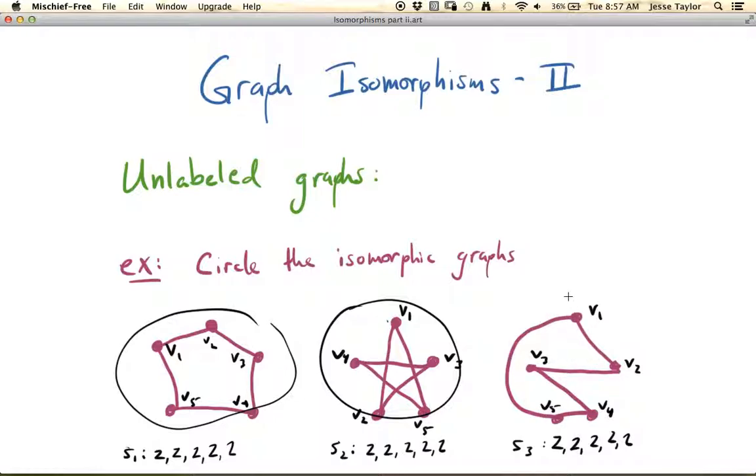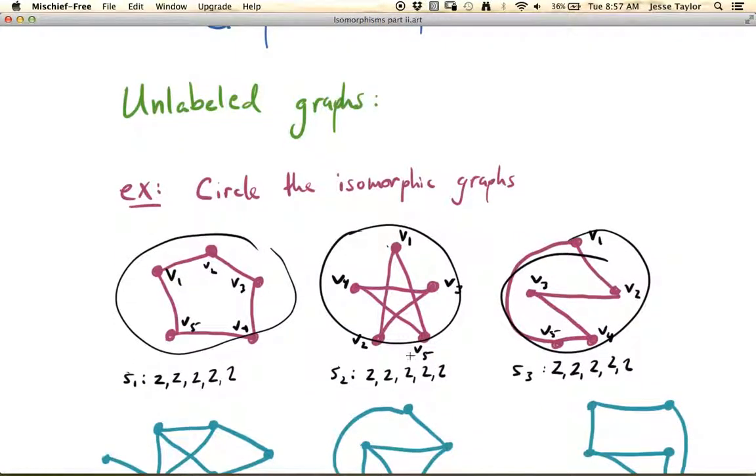And then you can sort of see here that what's going to happen if you continue the process like we did for this one. Again, we're just going to get a 5 cycle, right? 1, 2, 3, 4, 5, back to 1. So all of these are just a 5 cycle. The entire graph is a 5 cycle, and they're all isomorphic.